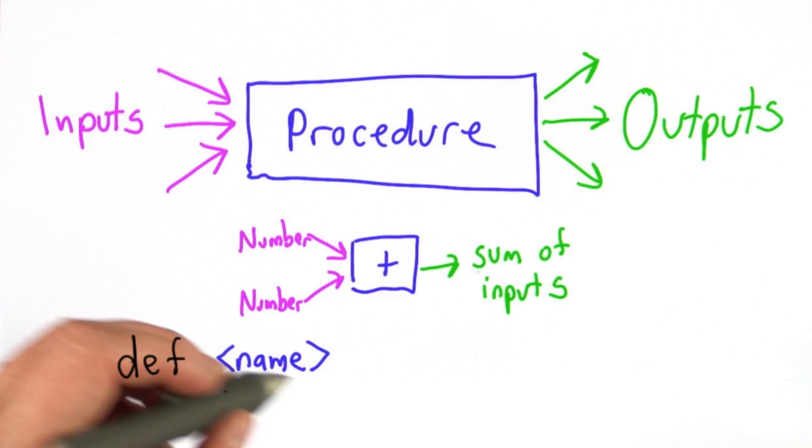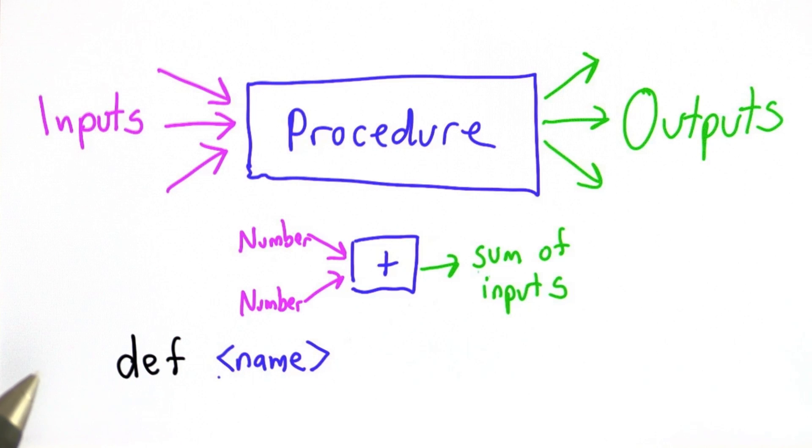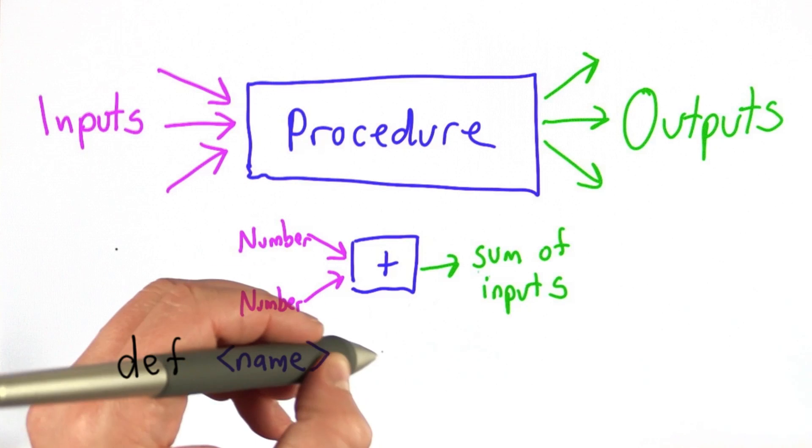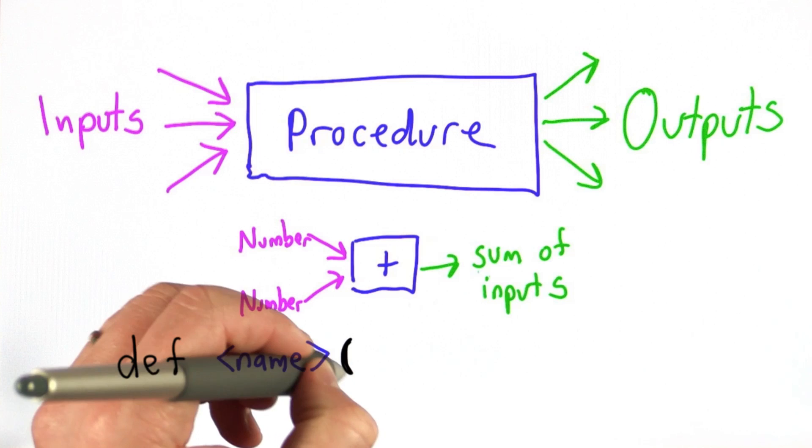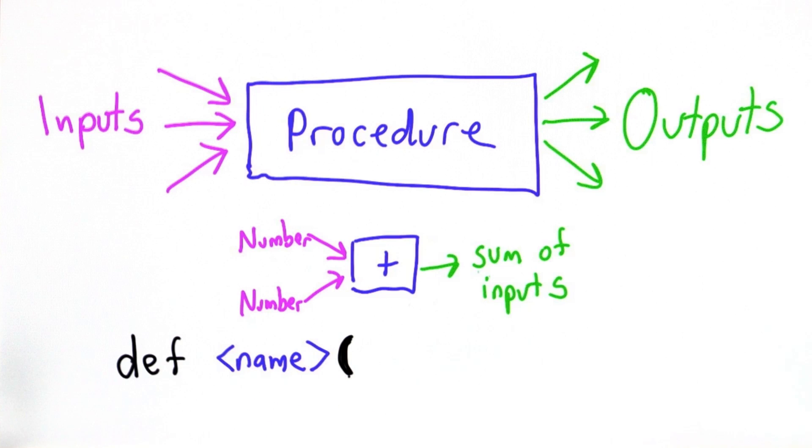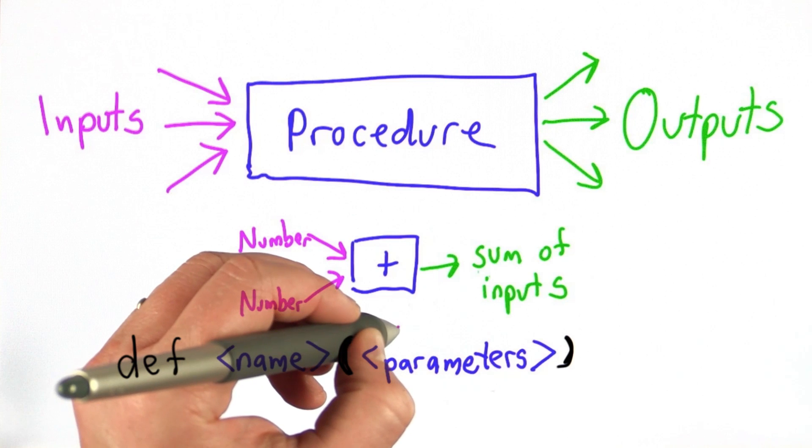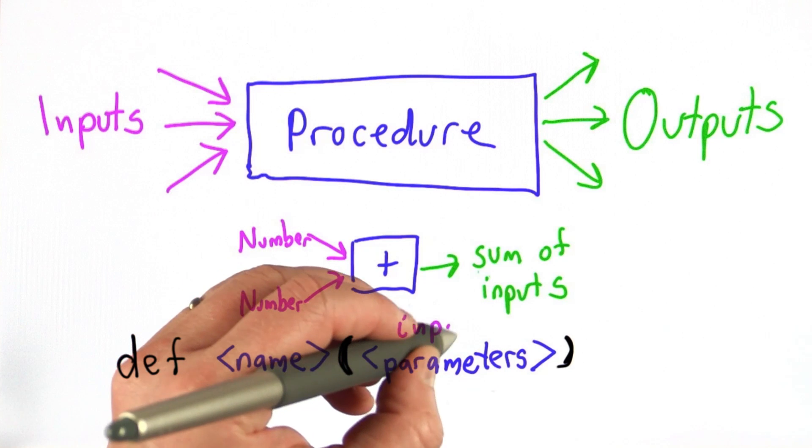It can be any string that starts with a letter, it can be followed by letters and numbers and underscores. Anything that we could use as a variable, we can use as the name of a procedure. Then there's a left paren. The left paren is very important, that's what makes it a procedure. And after the left paren we have a list of parameters. And parameters is just a fancy name for the inputs to the procedure.